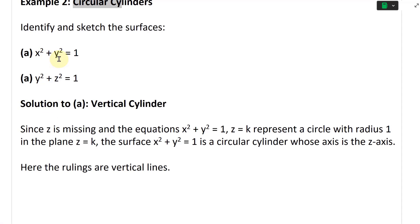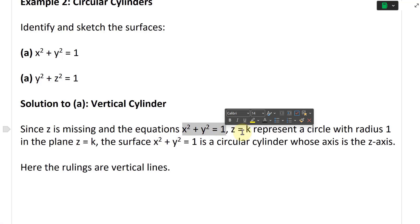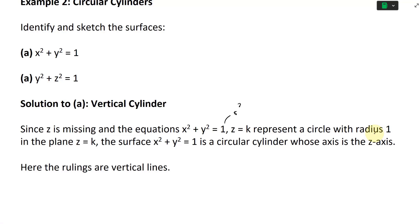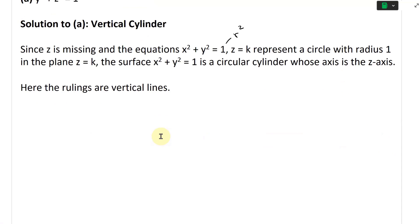For part A, we have x² + y² = 1. Notice that z is missing. Since z is missing, the equation x² + y² = 1 is just a circle where z = k. So for whatever value of z, you always just have a circle shifted based on that z value — a circle with radius 1 in the plane z = k. The surface x² + y² = 1 is a circular cylinder whose axis is the z-axis.